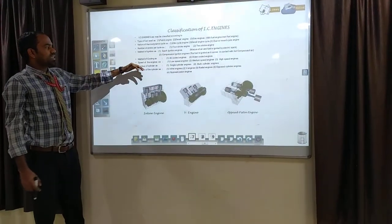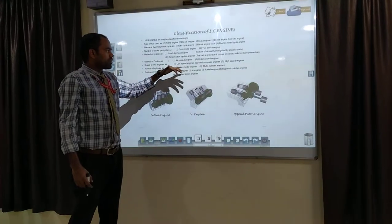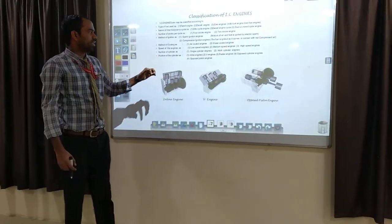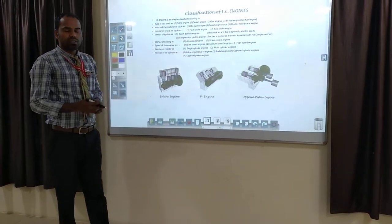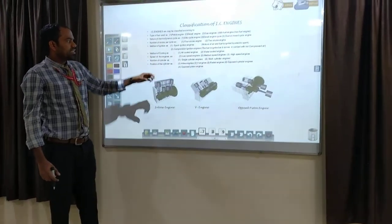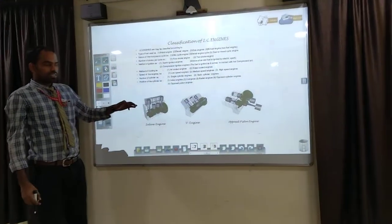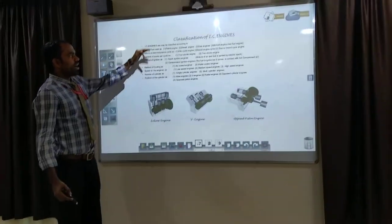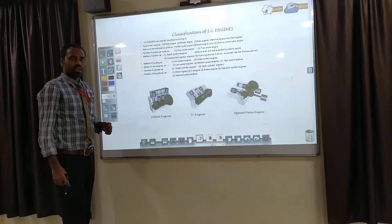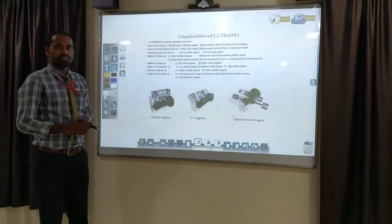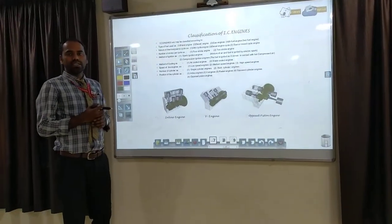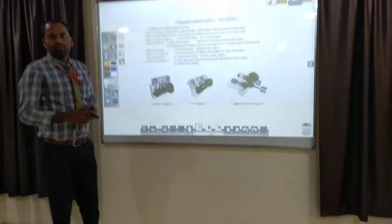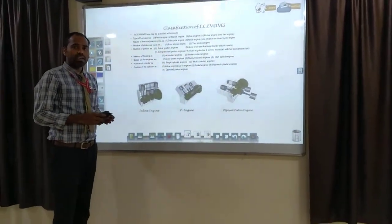Seventh point is number of cylinders — single cylinder engines or multiple cylinder engines. Eighth point is position of the cylinders, divided into four categories: radial engines, opposite cylinder engines, inline engines, and opposite piston engines. IC engines are also broadly classified into internal combustion engines and external combustion engines. In Thermal Engineering 1, we use two-stroke petrol engines, four-stroke petrol engines, or four-stroke diesel engines. Two-stroke petrol engines depend upon the Otto cycle, and four-stroke CI engines depend upon the diesel cycle.